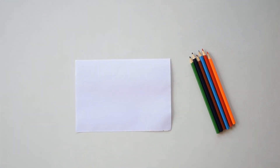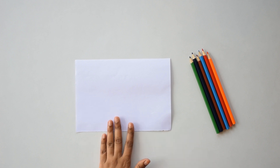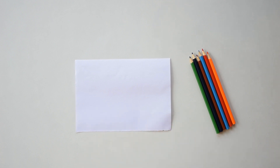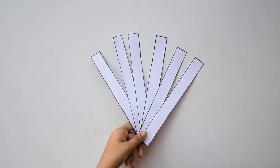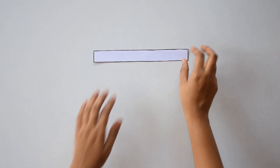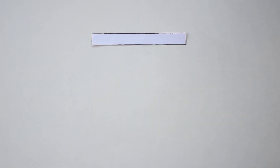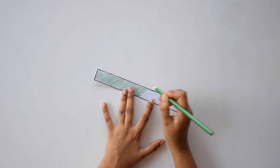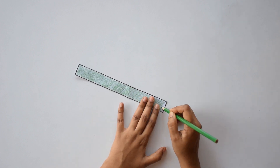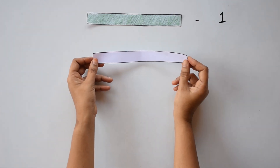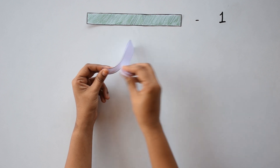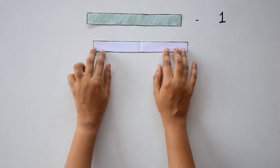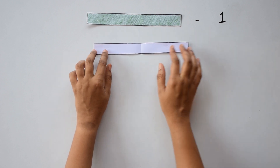Now let's move on to the activity. For this, we need a piece of paper and some color pencils. First, we'll cut the paper into six strips of equal size. Then let's take the first strip. This represents one whole. Let's take the next strip of paper. Let's fold it in the center. We get two equal parts. Let's shade one part.